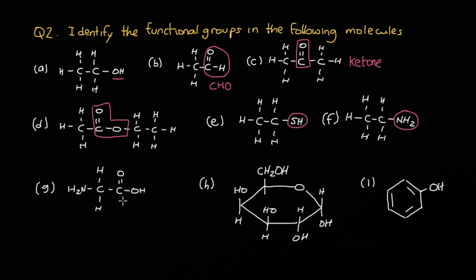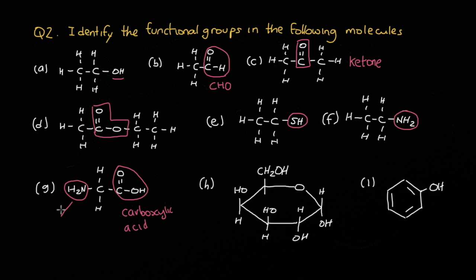G is an interesting one because we have two functional groups. We've got a carboxylic acid, and here we've got an NH2 just written backwards — an amine. So this molecule is carrying two functional groups, and it's an amino acid: 'amino' for the amine group, and 'acid' for the carboxylic acid functional group.